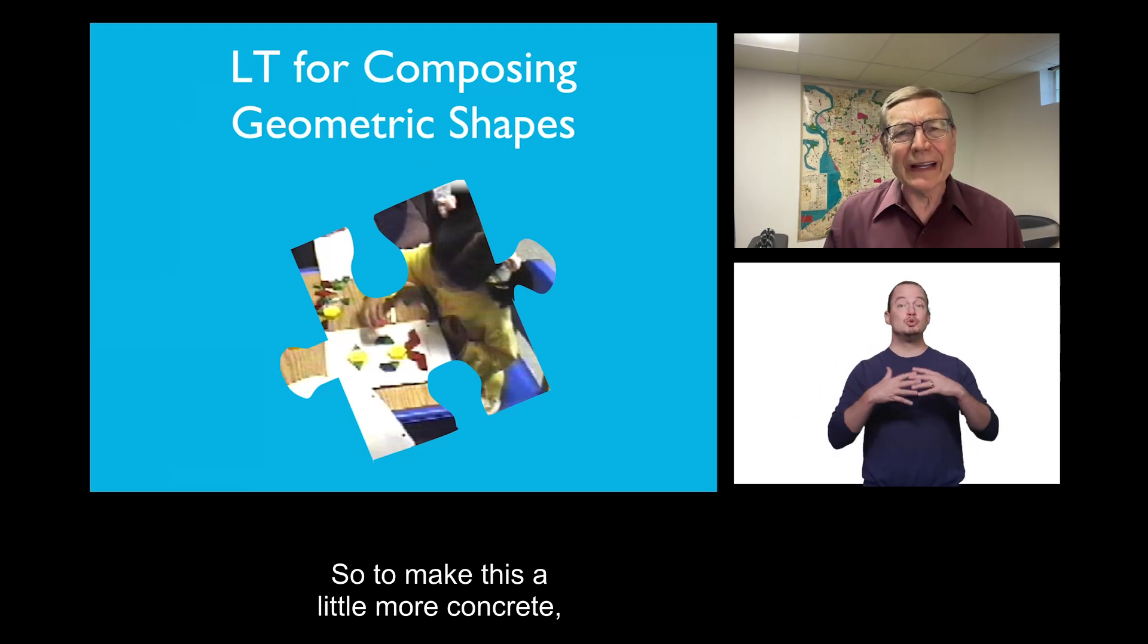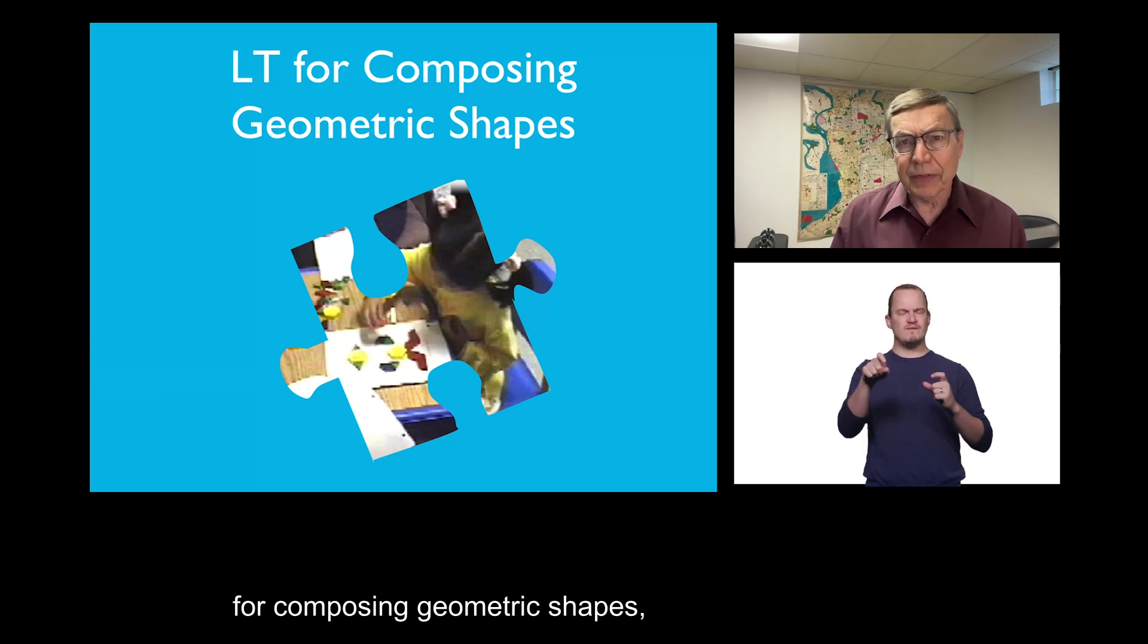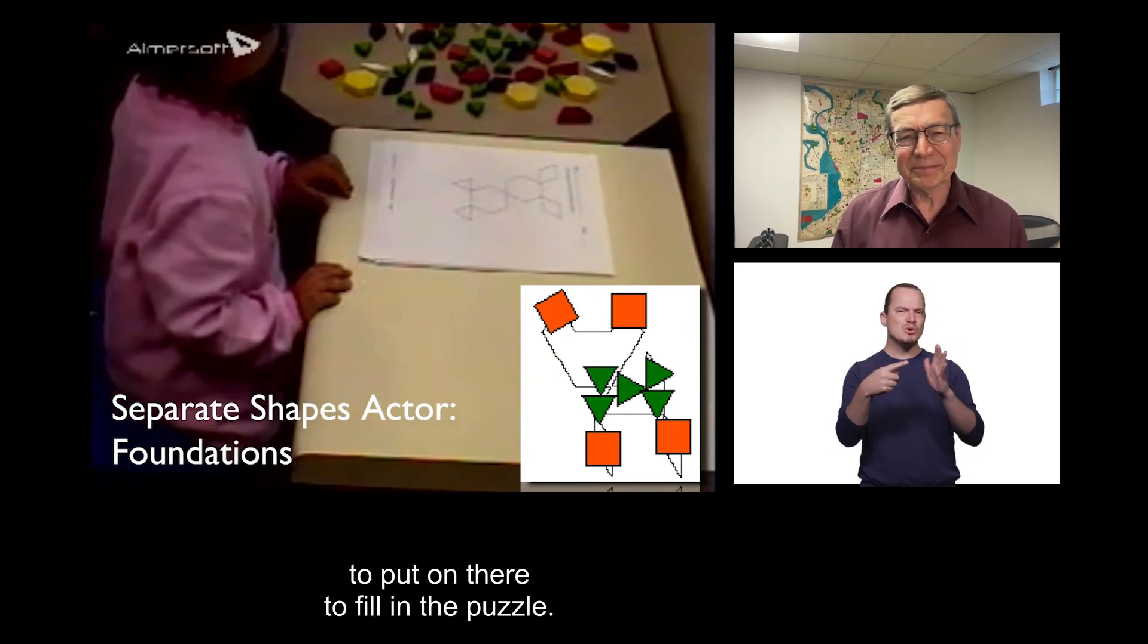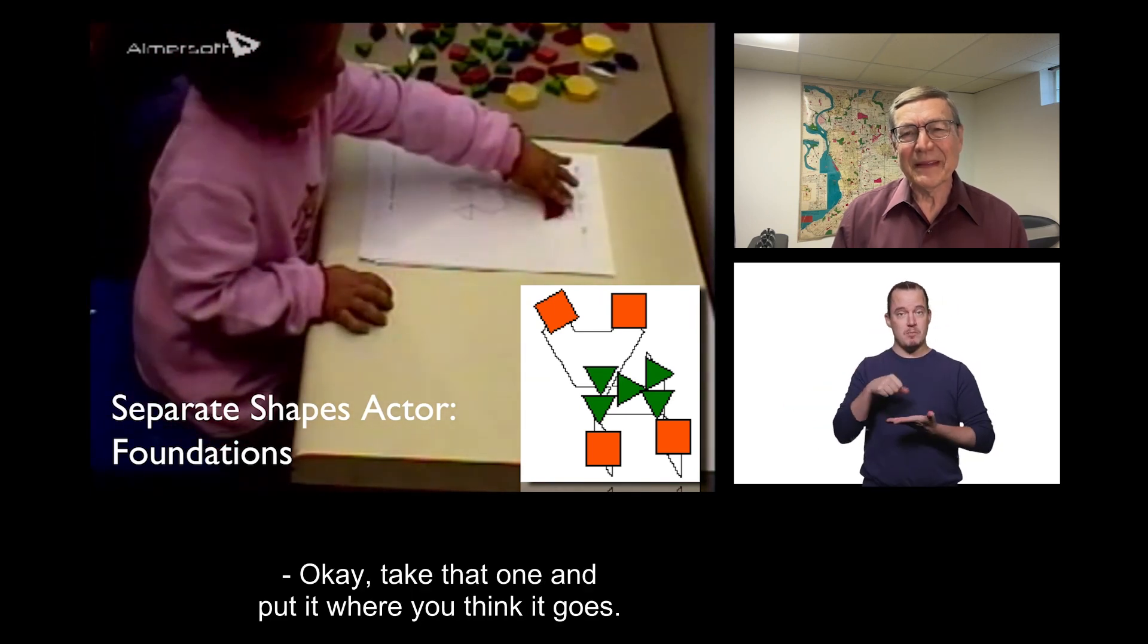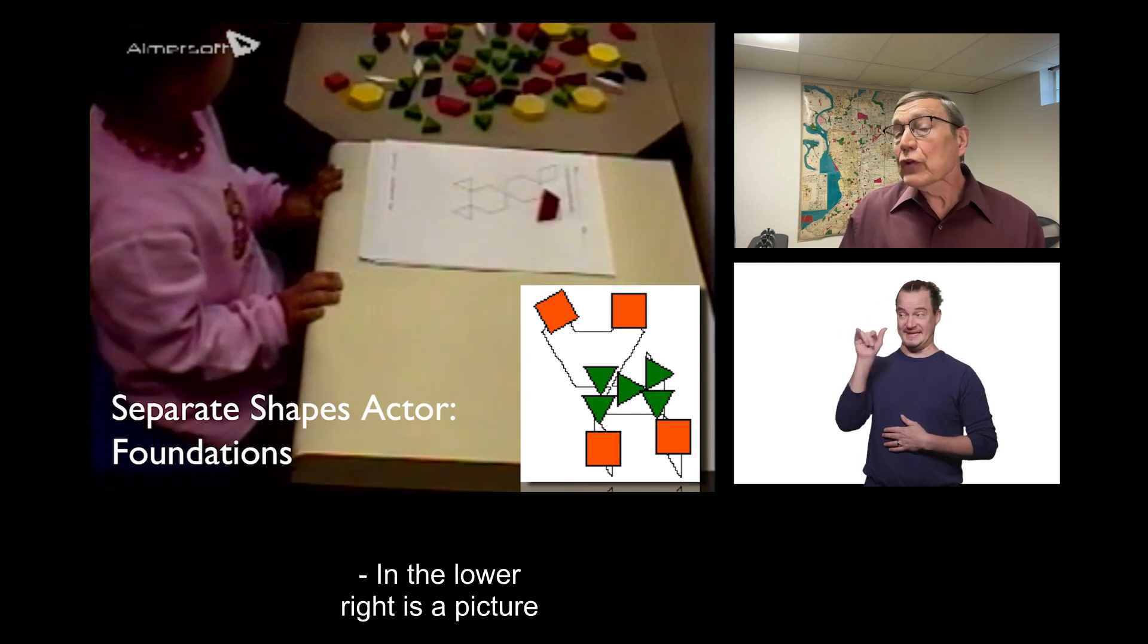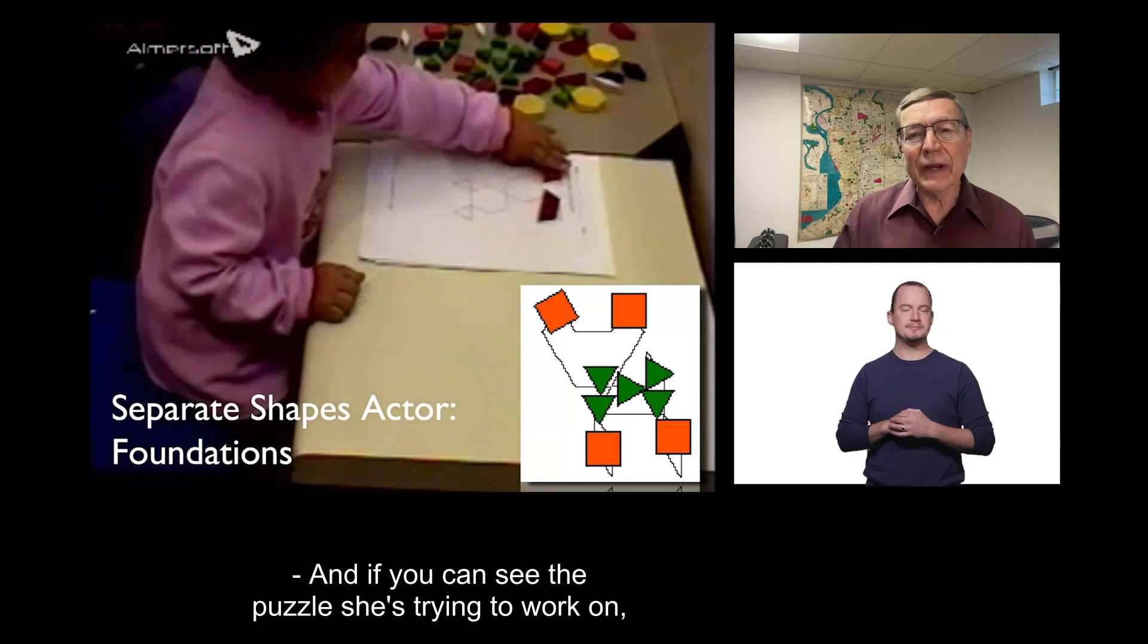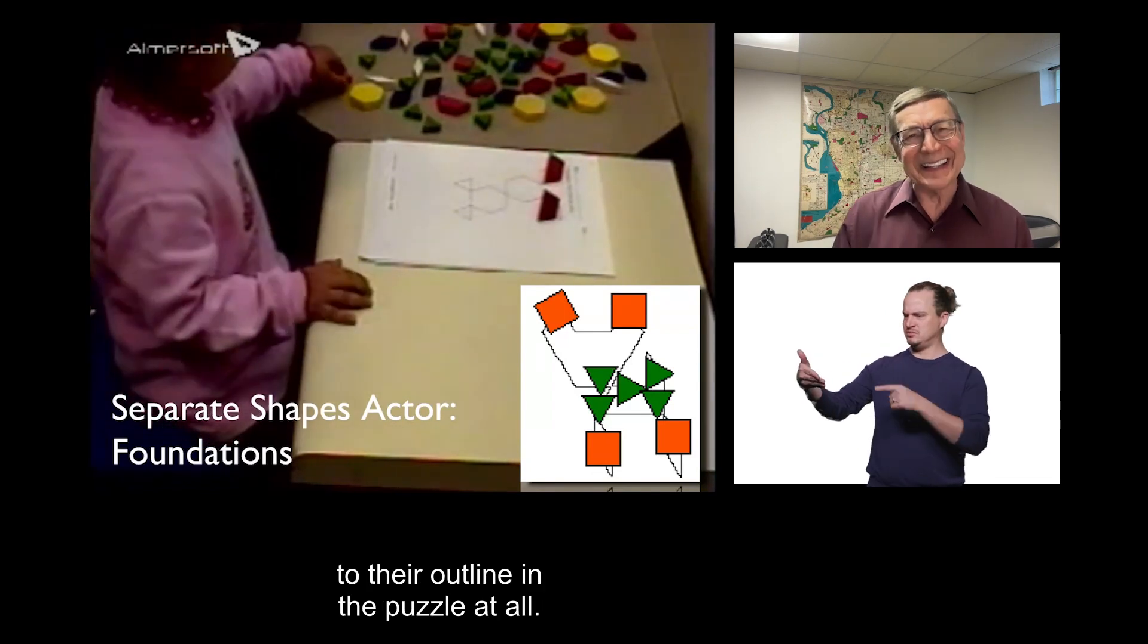So, to make this a little more concrete, we thought we'd look at learning trajectories for composing geometric shapes. Both two-dimensional or flat shapes and three-dimensional. Let's explore a little. Pick some of these pieces to put on there to fill in the puzzle. That one. Okay, take that one and put it where you think it goes. I hope you can see the puzzle she's working with. What else would you like to choose? Do some more? In the lower right is a picture of her previous attempt.